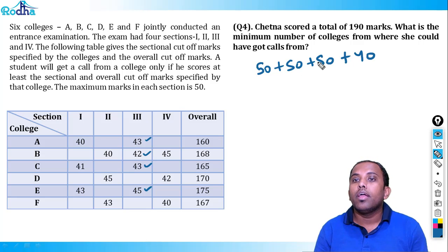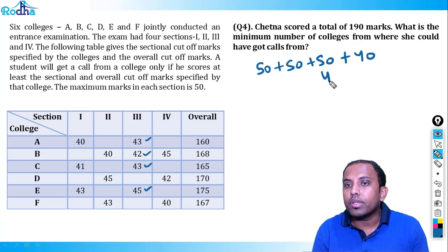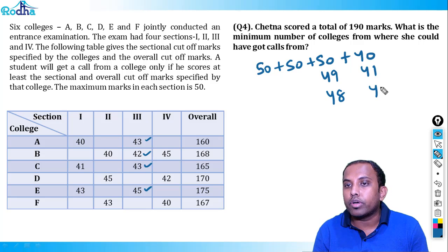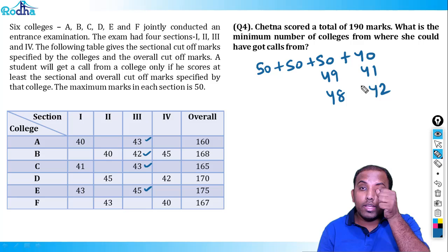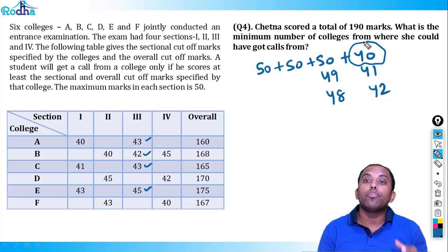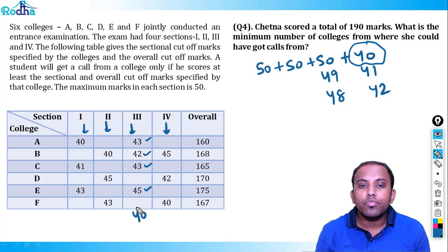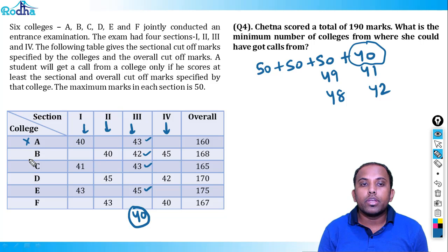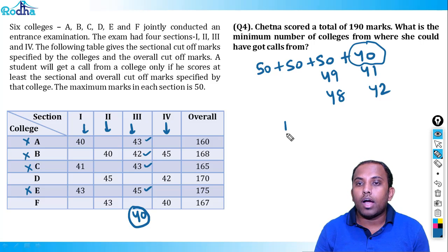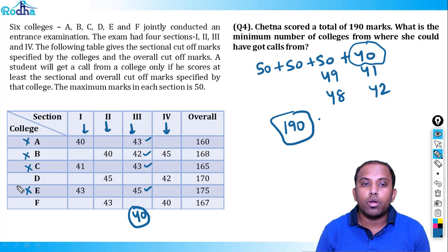With 40 as the minimum score, I want to place it in the section that eliminates the maximum number of colleges. Putting 40 in section 3 eliminates colleges A, B, C, and E — all four of them — since their section 3 cutoffs are 42 or higher. So even with 190 marks, if she scores 40 in section 3 and 50 each in the other sections, she only gets calls from colleges D and F.